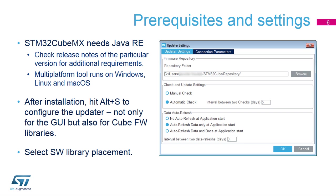Download the STM32CubeMX installer for free from the ST website and install it. Then set your preferences in the settings menu — one menu for the updater and library download (Alt+S), and the other menu for code generation and integration with development tool chains (Alt+P).